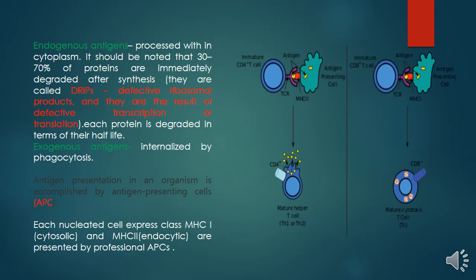There are two types of antigens: endogenous antigens and exogenous antigens. Endogenous antigens are processed inside the cytoplasm. There are some products of defective transcription and translation called RIPs, and they need to be degraded. Each protein is degraded in terms of its half-life to maintain the protein level in the cell. There are some proteins with very short half-lives, like transcription factors, cyclins, and metabolic enzymes. Some proteins are misfolded, denatured, or abnormal — they all need to be degraded in the cytoplasmic pathway for antigen processing and presentation.